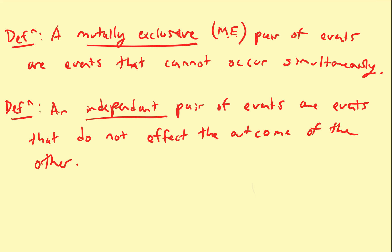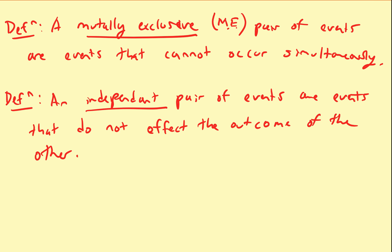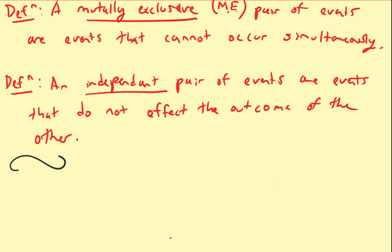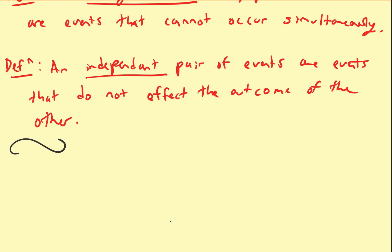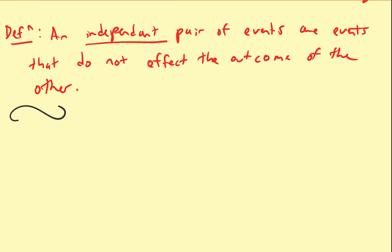Alright, so let us start with an example to demonstrate the difference between these two. So for example, let us assume we flip one coin, so that means heads or tails, or two coins, heads or tails.